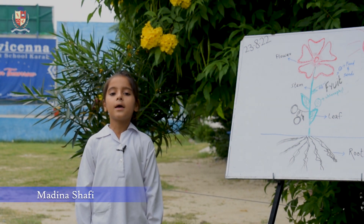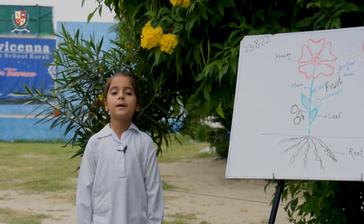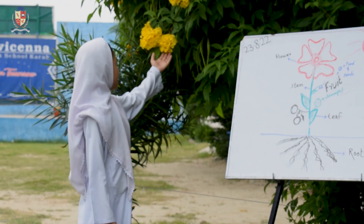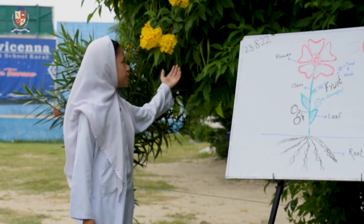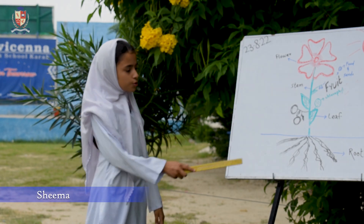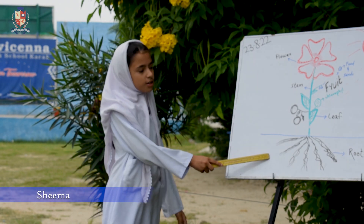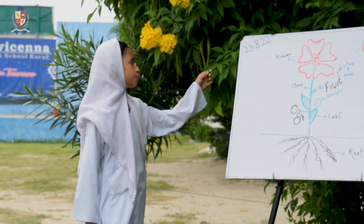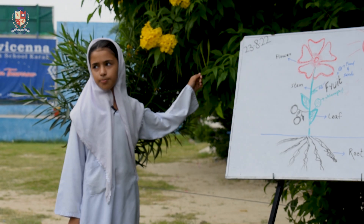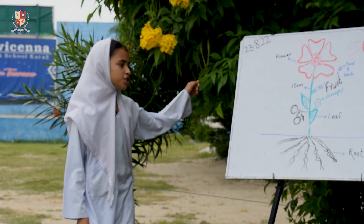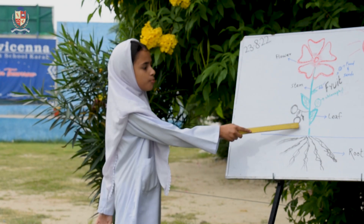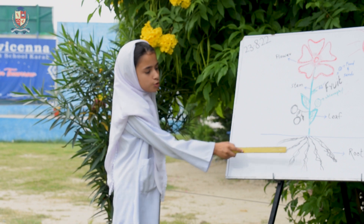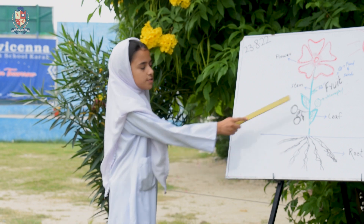Plants need sunlight, water, air and soil to grow. Flowers make seeds, roots take water from the soil, and leaves make food for the plants. The stem moves water from the roots to the leaves.